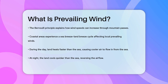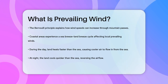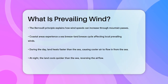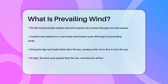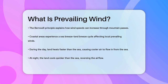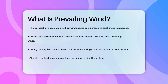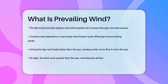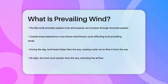Additionally, the sea-breeze-land-breeze cycle can influence prevailing winds in coastal areas. During the day, the land heats up faster than the sea, causing air to rise over the land and pull in cooler air from the sea. At night, the process reverses, with the land cooling faster than the sea.